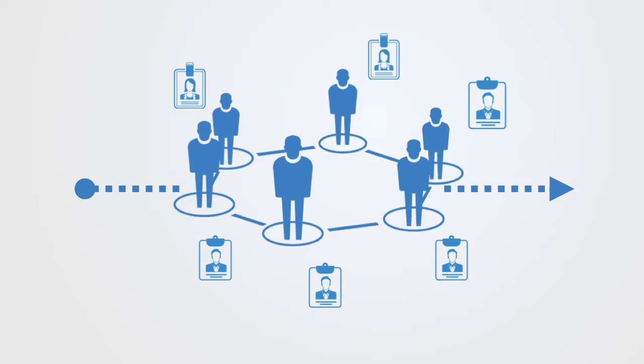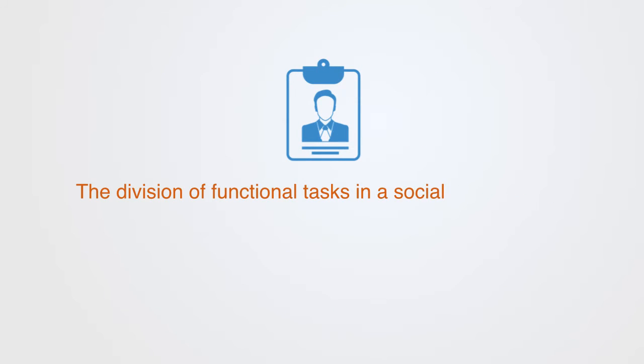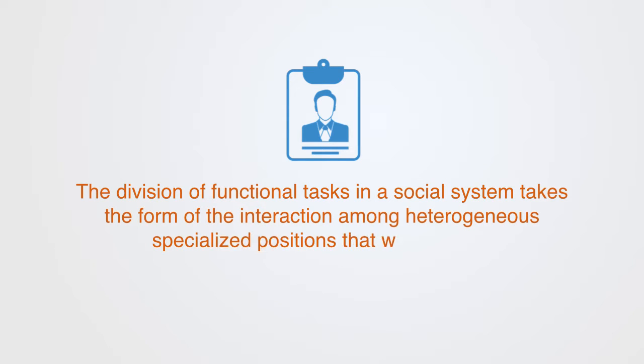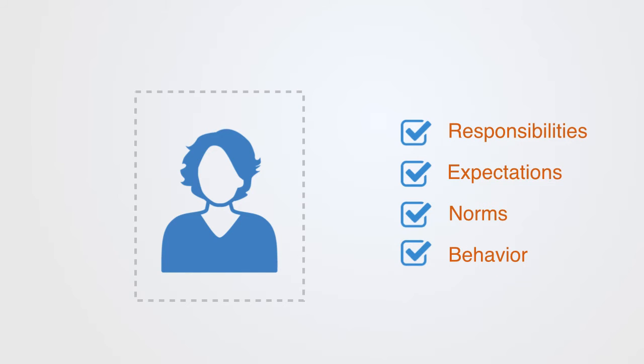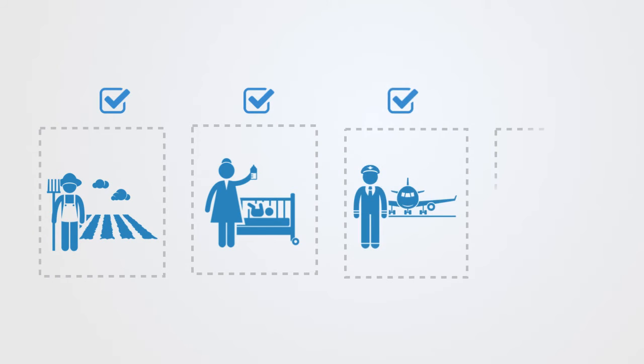The division of functional tasks within a society takes the form of the interaction among heterogeneous specialized positions that are called roles. A social role defines a set of behaviors and actions of someone who holds a particular social status. Roles such as mother, manager, or teacher constitute a set of responsibilities, expectations, norms and behaviors that a person has to fulfill in order for the institution to function effectively. Roles define differentiated states that individuals must occupy. They typically exist in relation to each other, what we call reciprocation roles such as the role of doctor and patient, student and teacher, father and daughter.